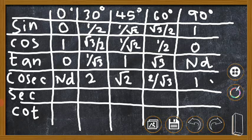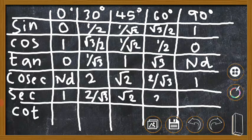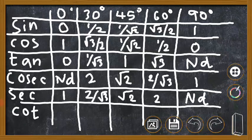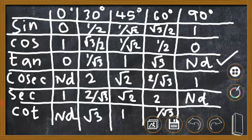For sec, just write the cosec values in reverse order: 1, 2/√3, √2, 2, and not defined. For cot, write the tan values in reverse order: not defined, √3, 1, 1/√3, and 0.